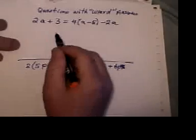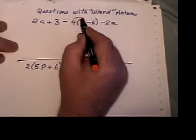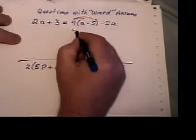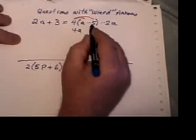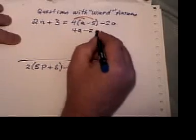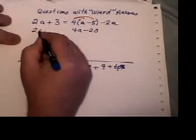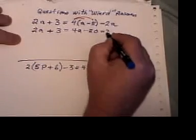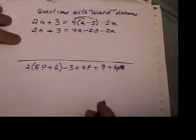The first question, as we've been taught, the first step is to get rid of the brackets using the distributive rule. So 4 times A is 4A. 4 times negative 5 is negative 20. Nothing changes on the left hand side and I still have negative 2A on the right hand side.